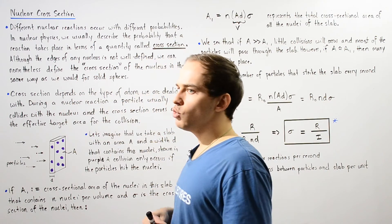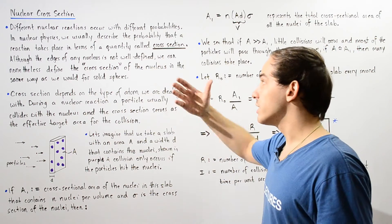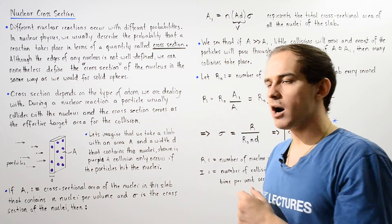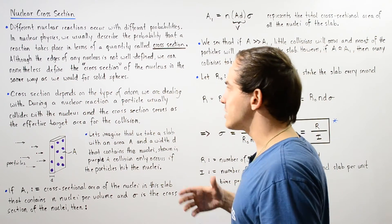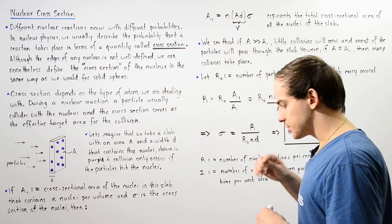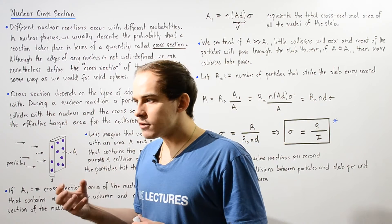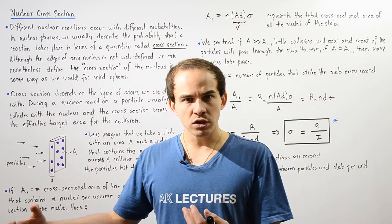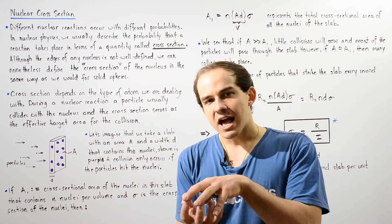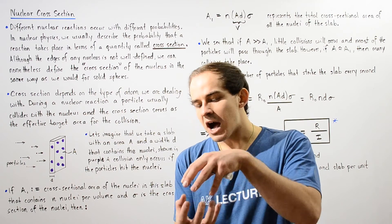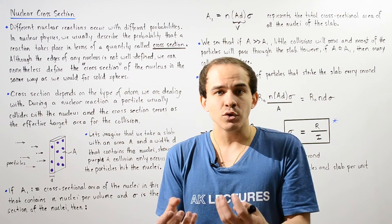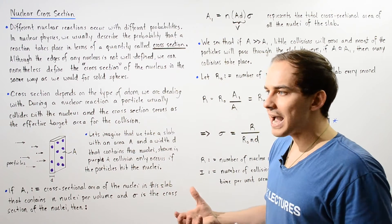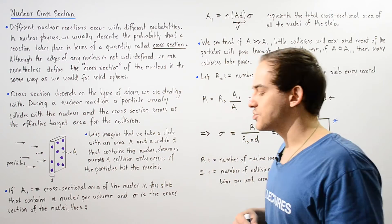Although the edges of any nucleus are not very well-defined, we can nonetheless define the cross-section of our nucleus in a similar way as we would define it for solid spheres. In order for a nuclear reaction to actually take place, a collision between a particle and the nucleus of our atom must occur. If we increase the size of the nucleus, we increase the cross-section and so we increase the likelihood that the collision will actually take place.